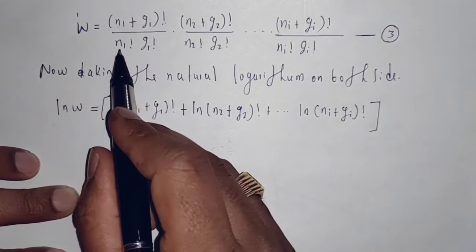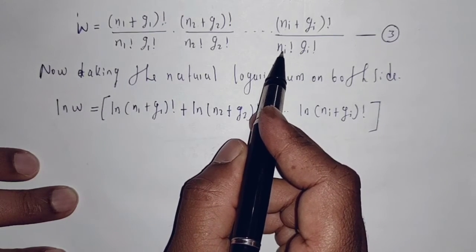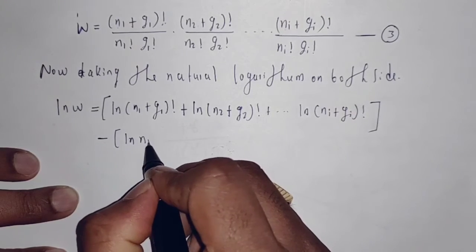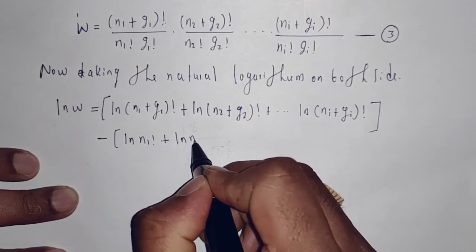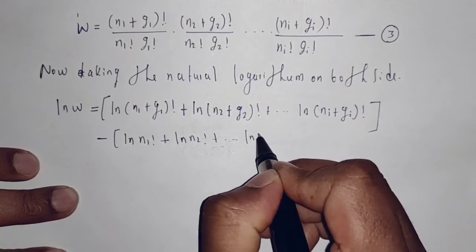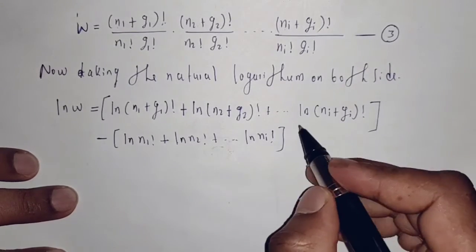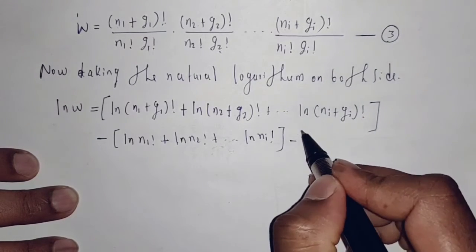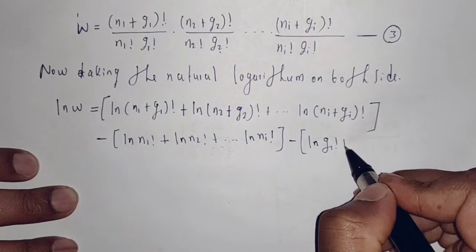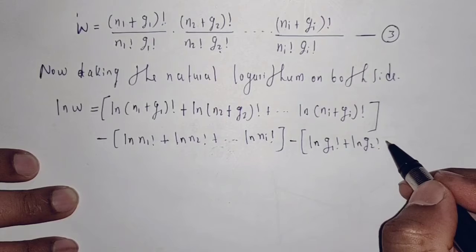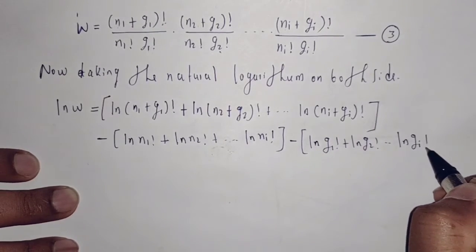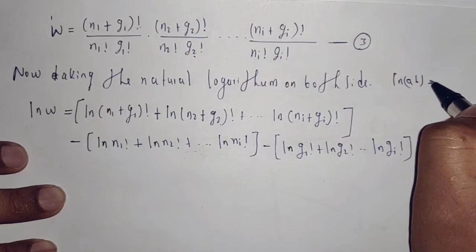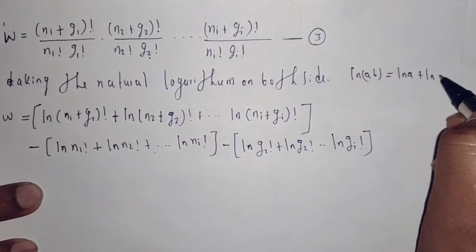In the denominator we have n1 factorial, n2 factorial, and so on ni factorial, written as minus ln(n1)! + ln(n2)! + ... + ln(ni)!. Also in the denominator we have g1 factorial, g2 factorial, and so on gi factorial, written as minus ln(g1)! + ln(g2)! + ... + ln(gi)!. Here I am using: ln(a·b) = ln(a) + ln(b), and ln(a/b) = ln(a) - ln(b).